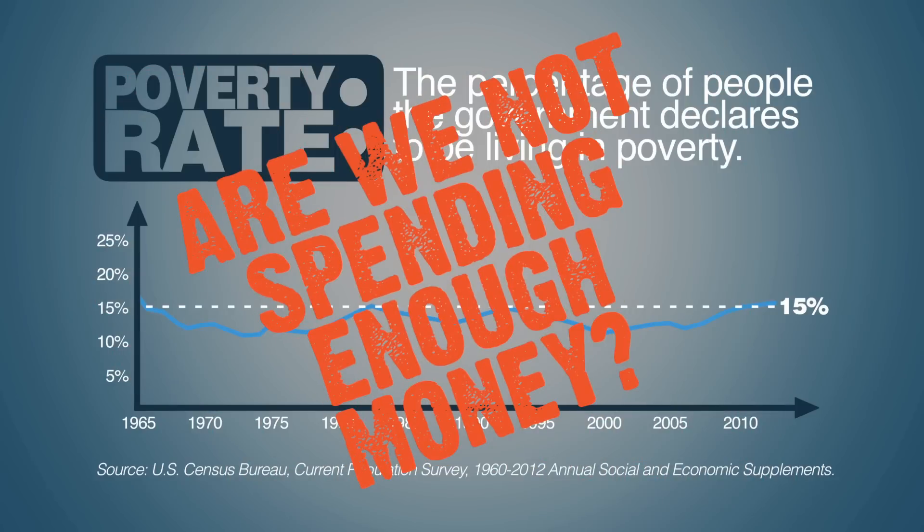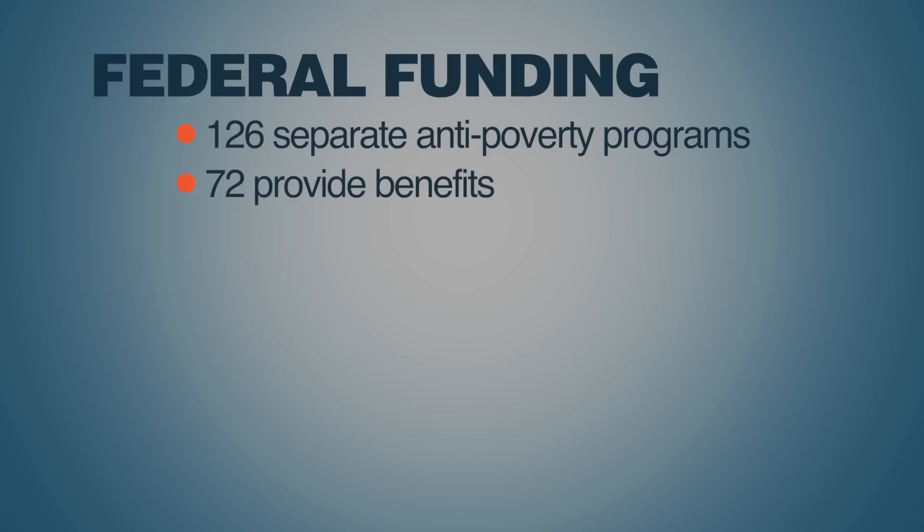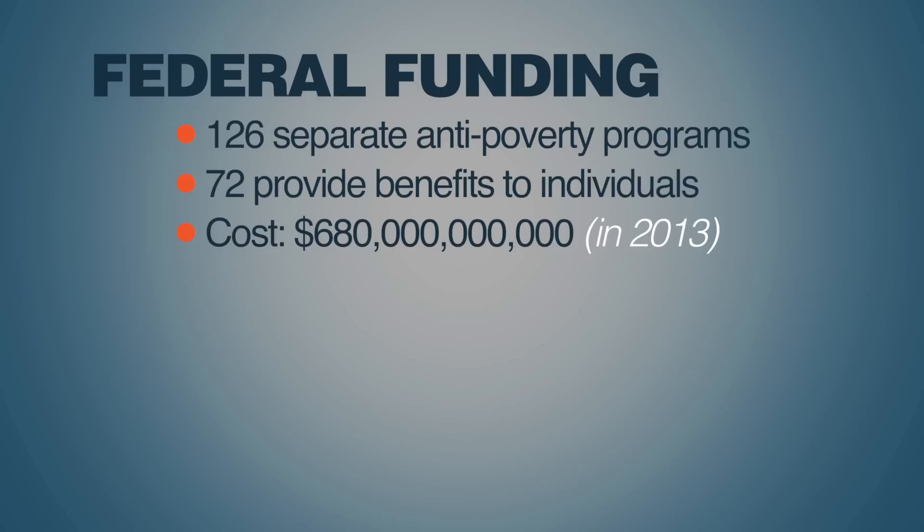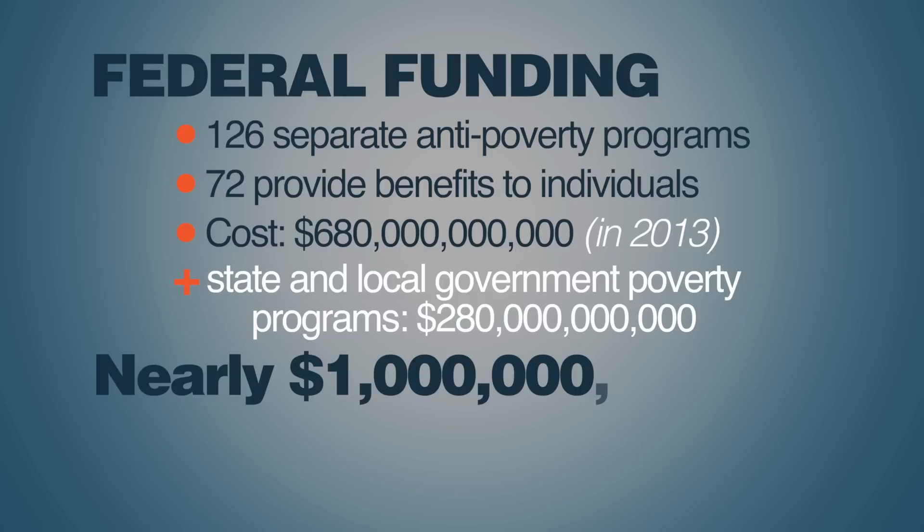Are we not spending enough money? The federal government funds 126 separate anti-poverty programs. Seventy-two of these provide benefits either directly or indirectly to individuals. The cost? $680 billion in 2013. Add in state and local government spending on poverty programs? Another $280 billion. And the total comes to nearly $1 trillion. That's for one year.